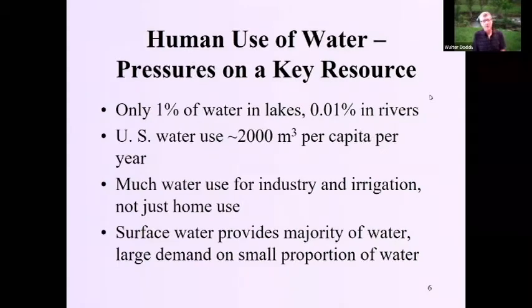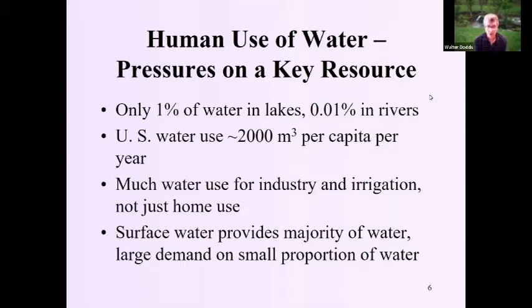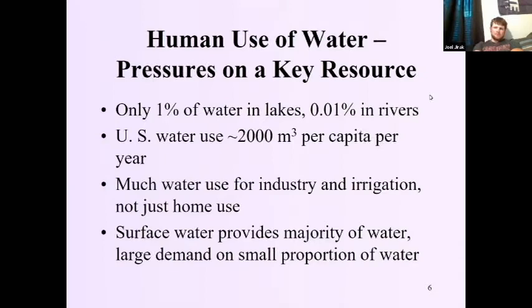So the first concept is the idea of pressures on use of water as the key resource. Really only 1% of all the water is in lakes and 0.01% is in rivers. In the U.S. we use about 2,000 cubic meters — sort of bigger than a large dorm room — per person per year. But much of this water is used for industry and irrigation, not just the water that comes out of the tap for a shower or for drinking. Industry and irrigation use tremendous amounts of water, not just home use. And most of this water comes from surface water, for which there is a large demand despite it being a small proportion of all water.